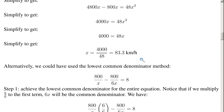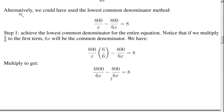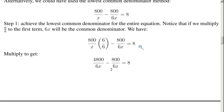So that's one method. There's another method that's similar but slightly different — the lowest common denominator method. Step 1: achieve the lowest common denominator for the entire equation. If we multiply 6 over 6 to the first term, 6x will be the common denominator. We take the first term and multiply it by 6 over 6, leaving the other terms the same. So 6 times 800 is 4800, and 6 times x is 6x. Now we have 4800 over 6x minus 800 over 6x equals 8.